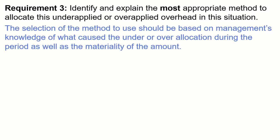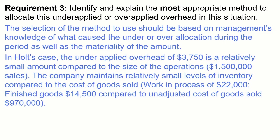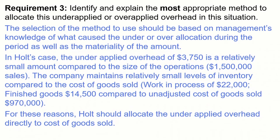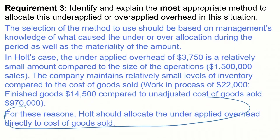So we simply look at whether the amount is material or not. In Holt's case, the underapplied overhead of $3,750 is a relatively small amount compared to sales of $1,500,000. The company also maintains small inventory levels — work in process $22,000 and finished goods $14,500 — compared to the unadjusted cost of goods sold of $970,000. For these reasons, Holt should allocate the underapplied overhead directly to cost of goods sold. That's the most appropriate method and why.